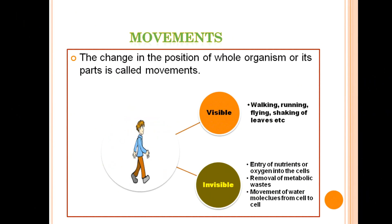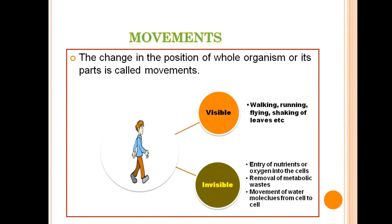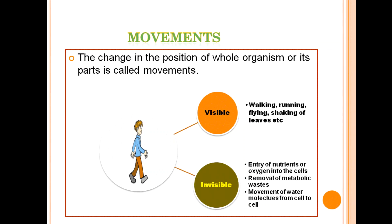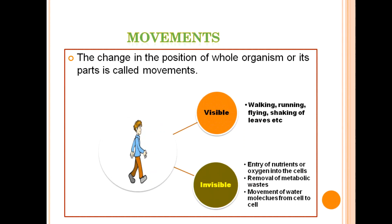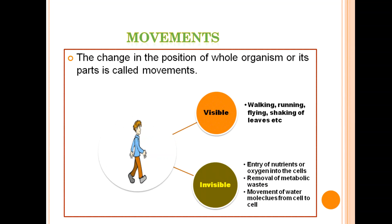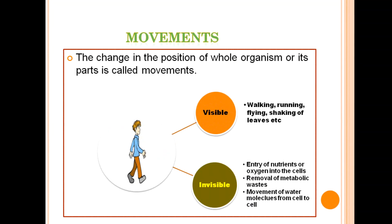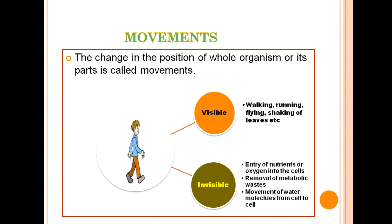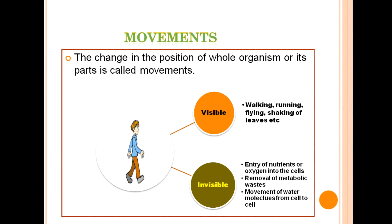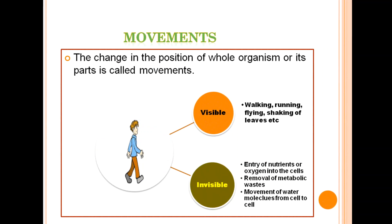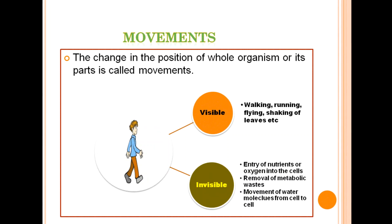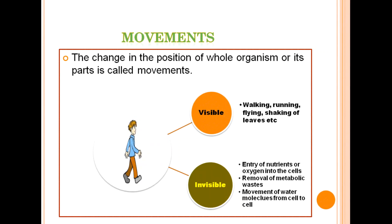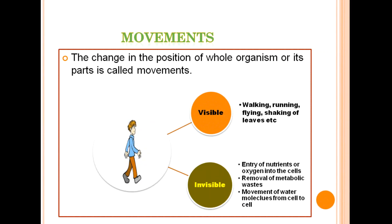Now let us discuss about movements. As defined earlier, it is the change in the position of the whole organism or its parts. Movements like walking, running, flying, and shaking of leaves are visible to our eyes — this is known as visible movement. The entry of nutrients or oxygen into cells, or removal of metabolic wastes from our body, and the movement of water molecules from cell to cell, cannot be seen with our naked eyes. This kind of movement is known as invisible movement.